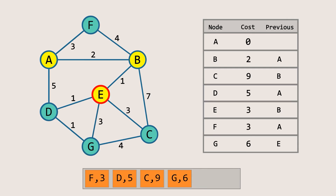Next, let's visit node D. This is interesting because the cost to reach D via E is 4, which is less than the earlier cost of 5, so we update the new cost to 4 and also update the previous node to E. We also need to update the cost of D inside the already-inserted element in the priority queue. We find that element and change the cost from 5 to 4. This process is called decrease key.